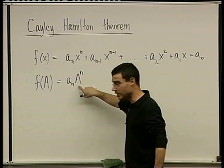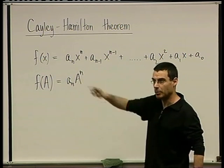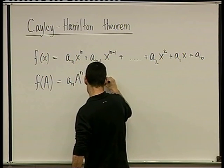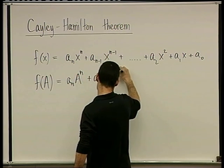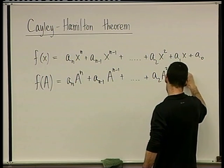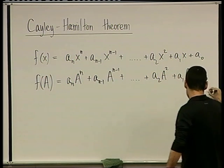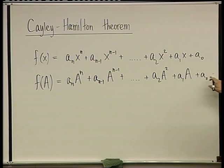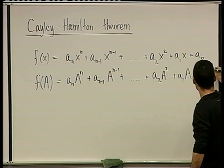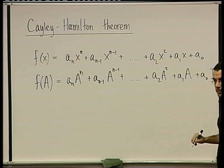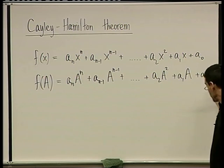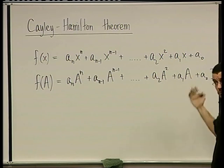In fact, if A is diagonalizable, we know a shortcut of how to do it — that was the theorem in the previous lesson. So you get a_n A^n plus a_{n-1} A^{n-1} plus dot dot dot plus a_2 A squared plus a_1 A plus a_0 I. Because these are all matrices, the constant term must be a_0 times I — I is A to the power 0. So f of A is a matrix, precisely the matrix plugged into the polynomial.